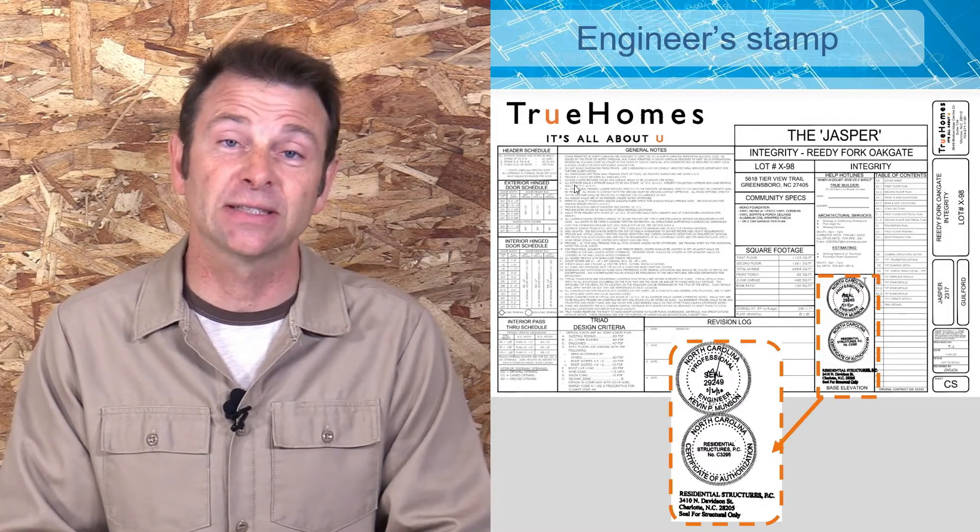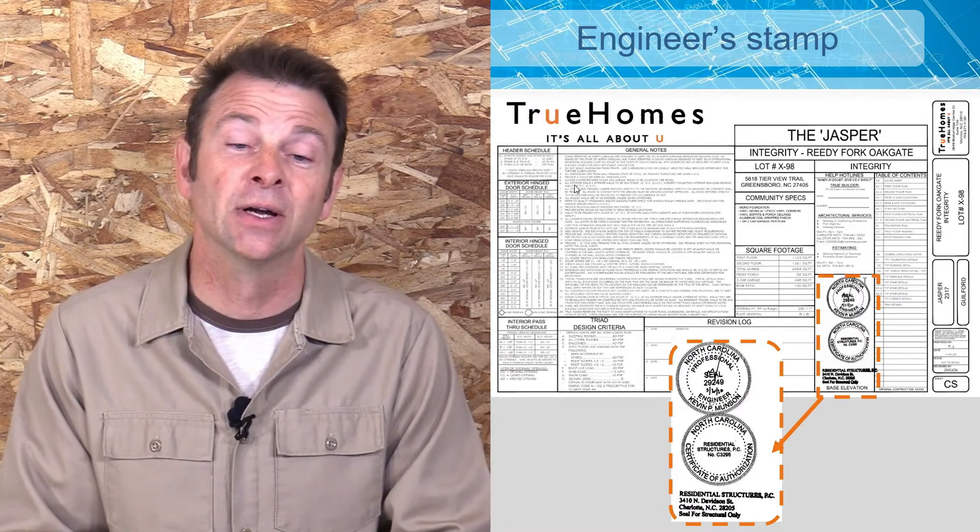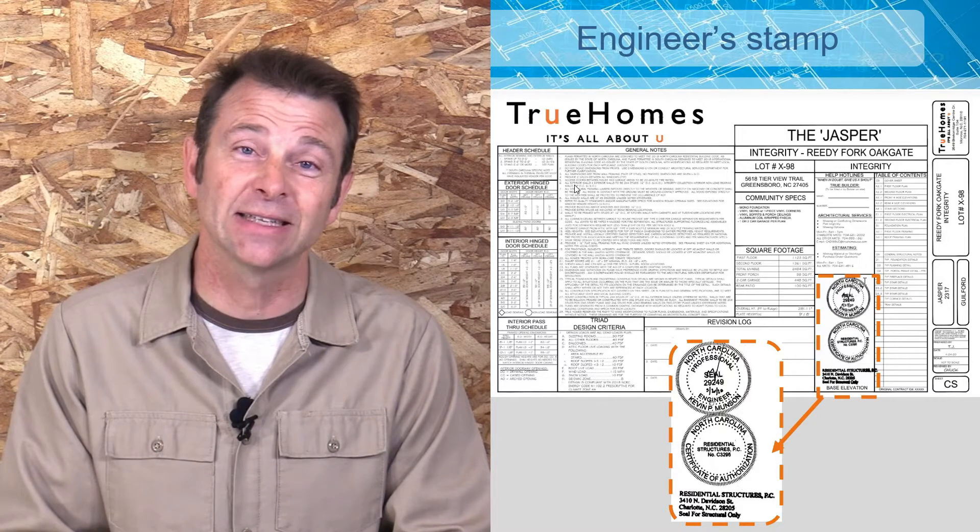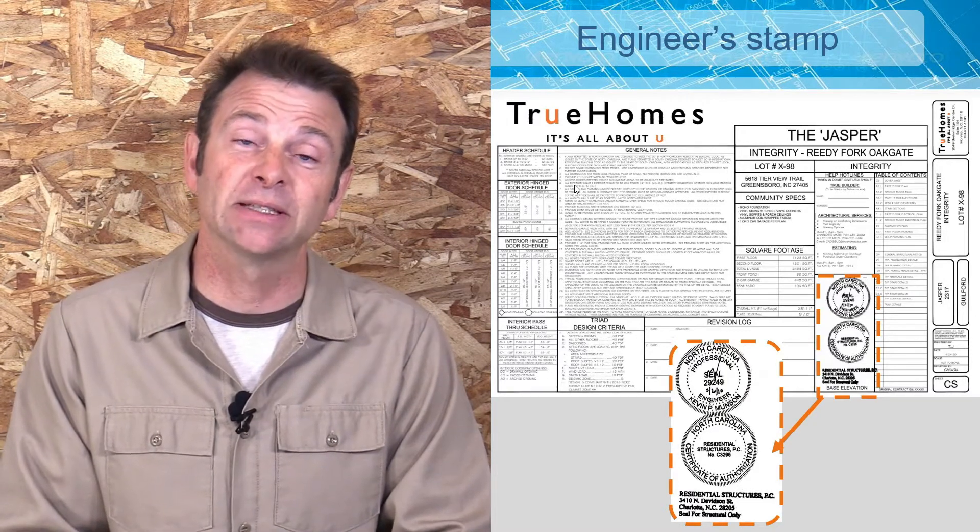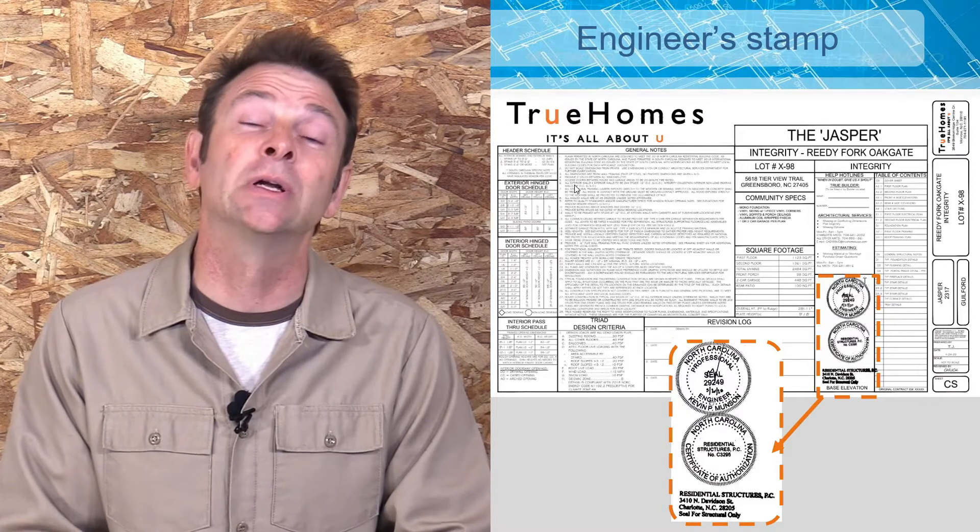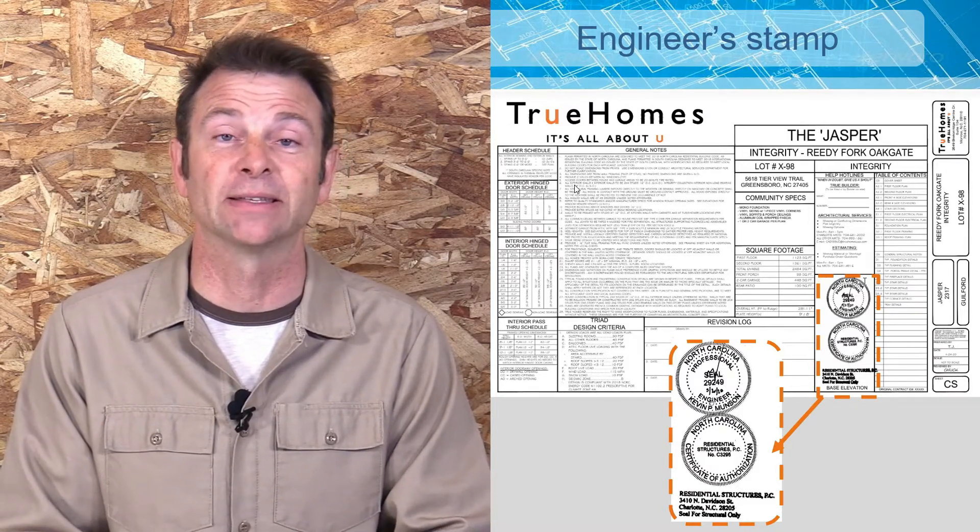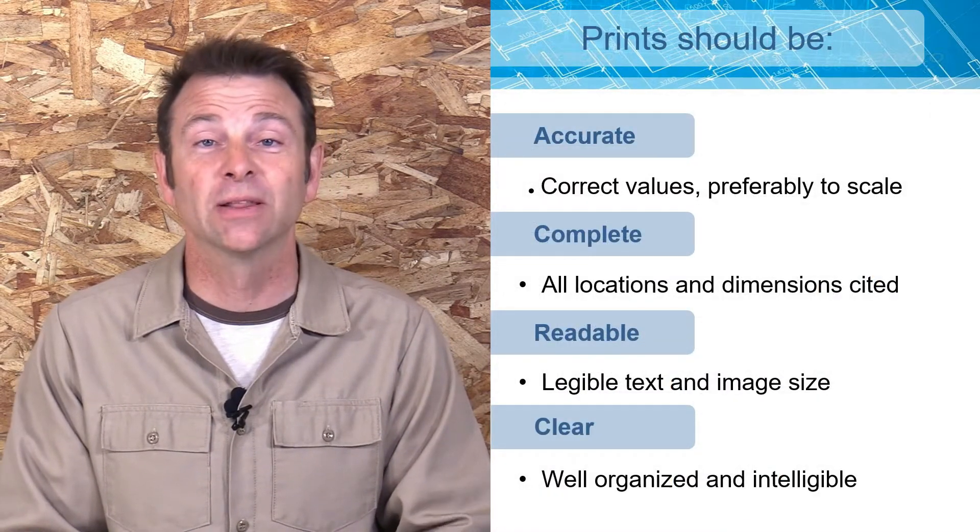This is a specific set of information. It also has to be verified by a professional. You should find an engineer stamp on a set of plans. As you can see here, this is their official seal. This is a licensed engineer. These plans have been checked, they are structurally sound, and they meet local and international building codes.